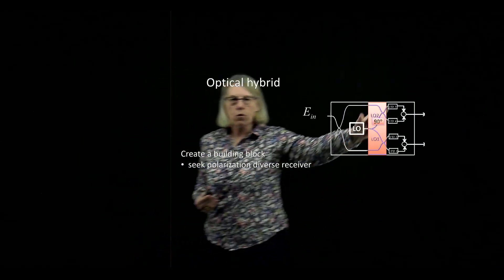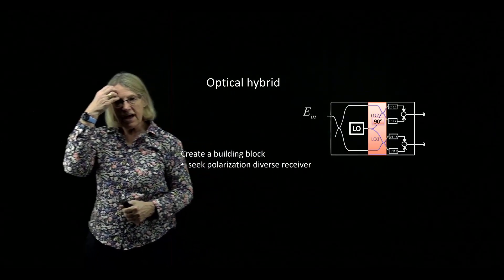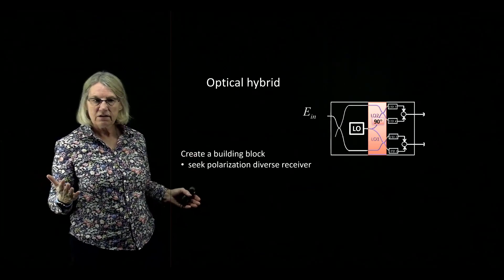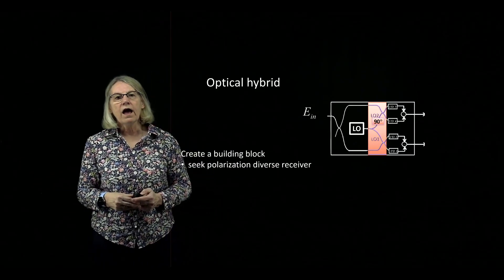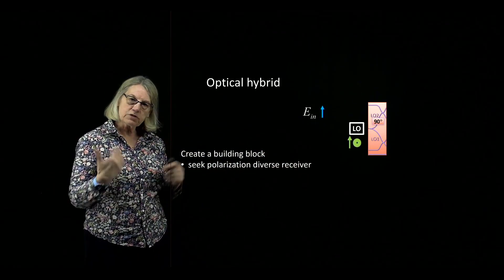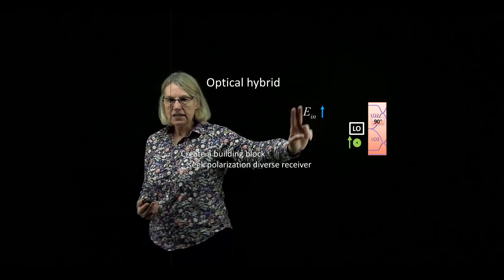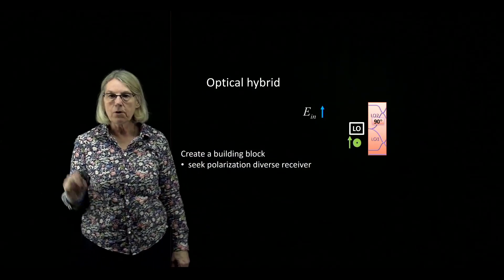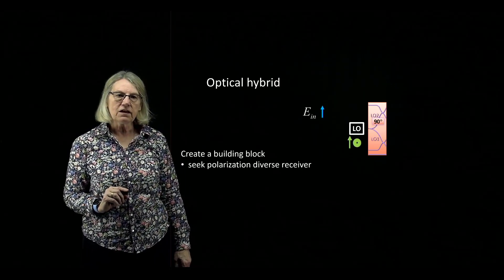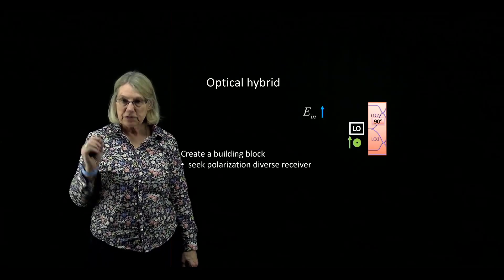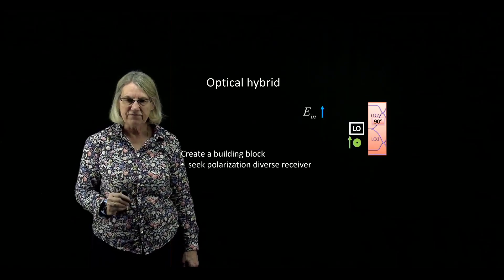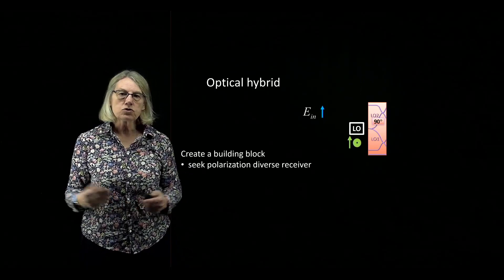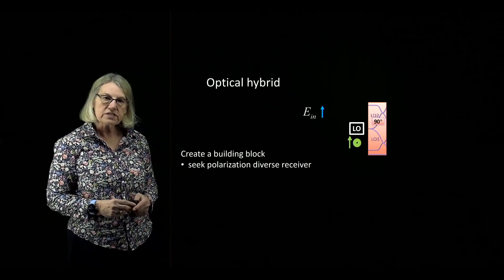I'm going to take the portion of the coherent detector that involves mixing the local oscillator with the received signal and creating tributaries for I and Q, and pull that out. The assumption now is that the input signal has one polarization, but the local oscillator will have two polarization states present — both X and Y. The local oscillator is going to have a very particular polarization state: 45 degrees, so there's equal power in X and Y, and this does not change with time.